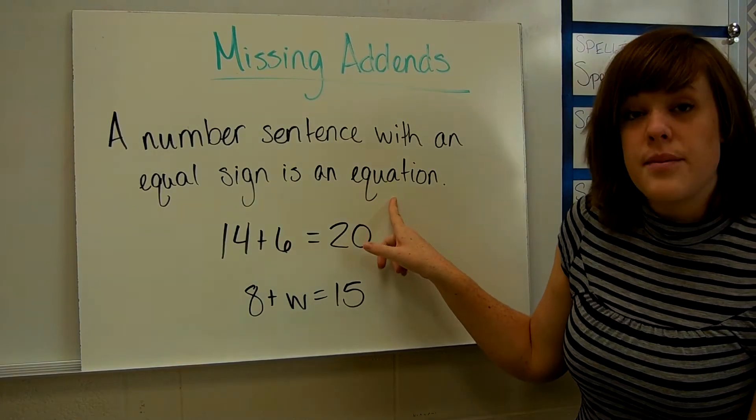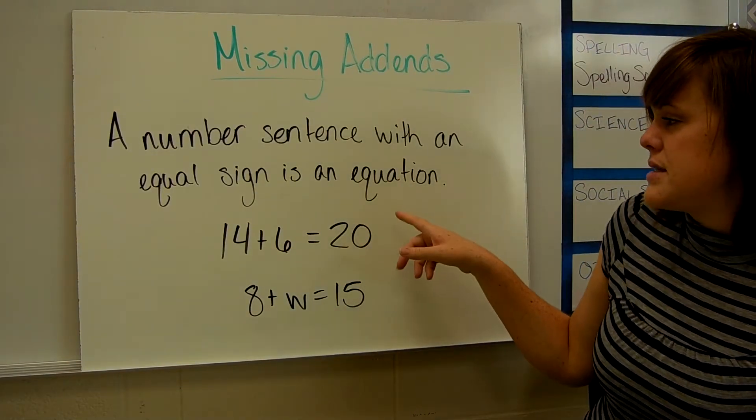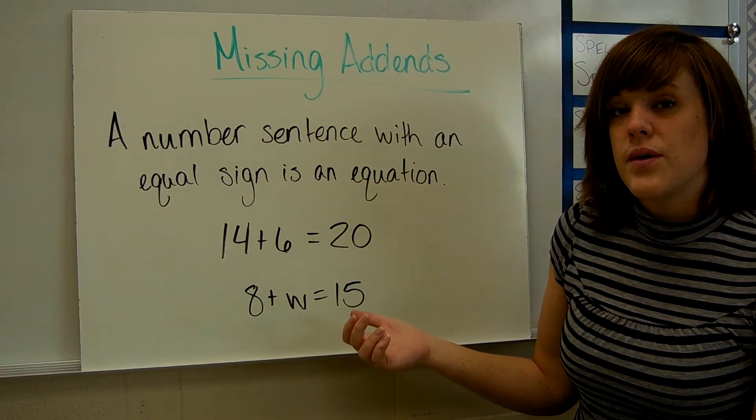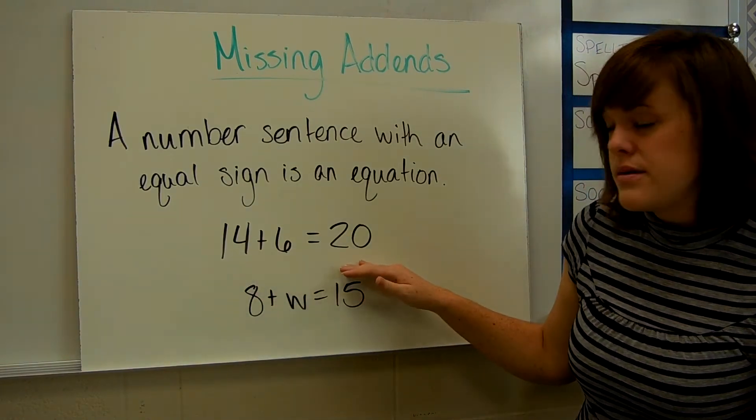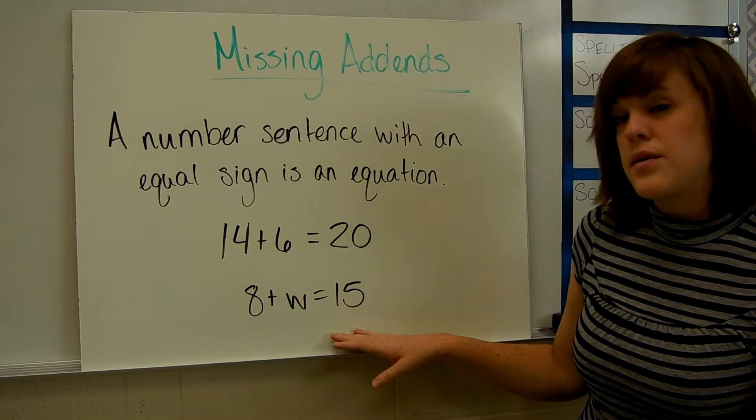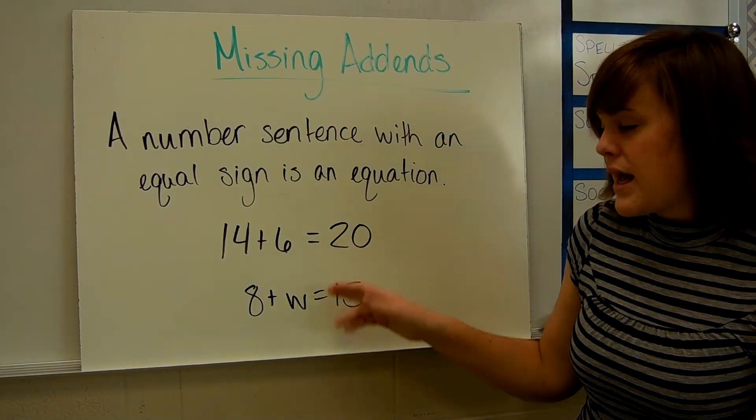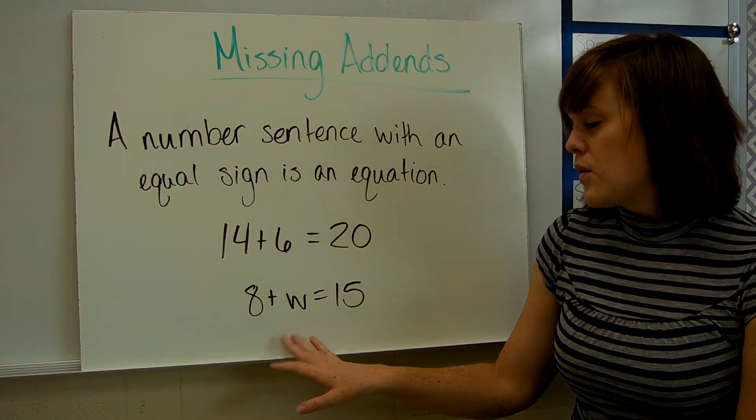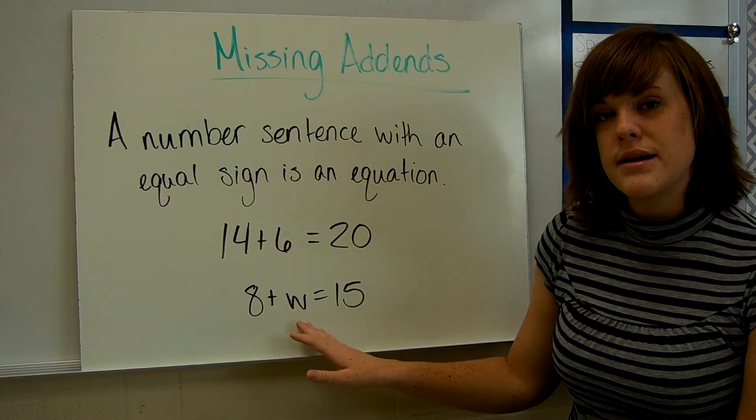An important thing to know right off the bat is that a number sentence with an equal sign is an equation. So this is an equation, and this is also an equation. Whether or not it has a letter in it, which we call a variable, whether or not it has a variable in it, it is an equation.